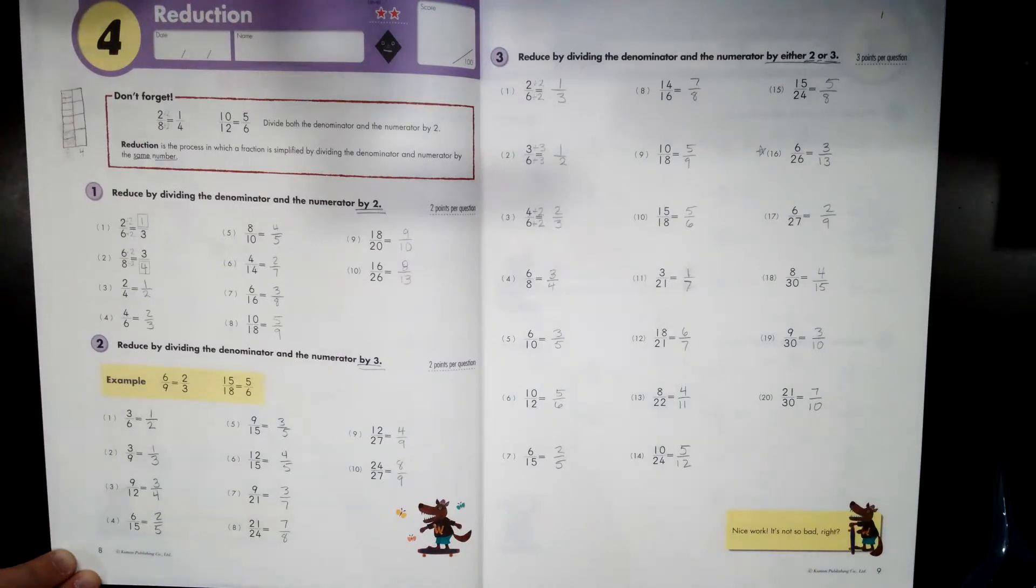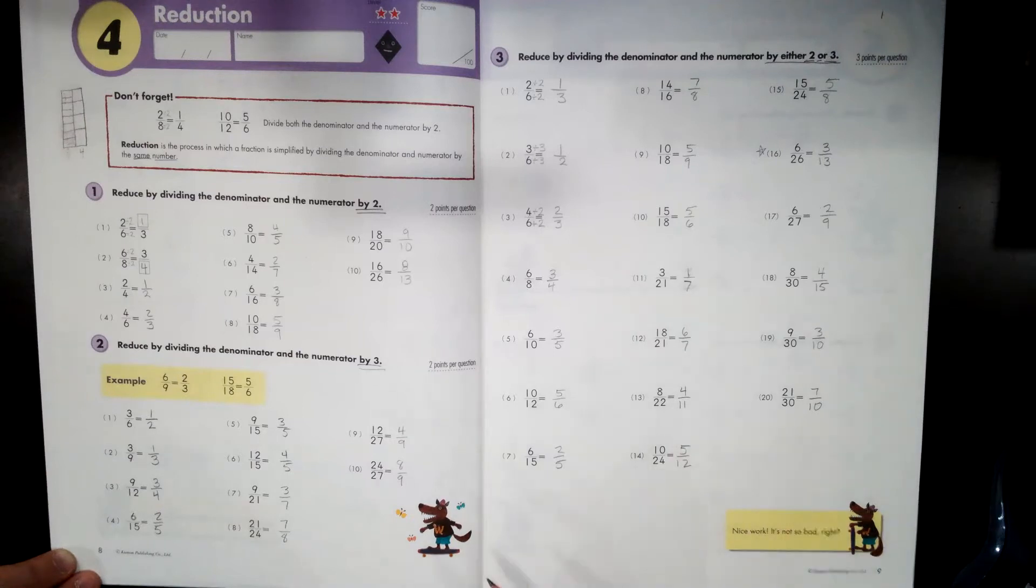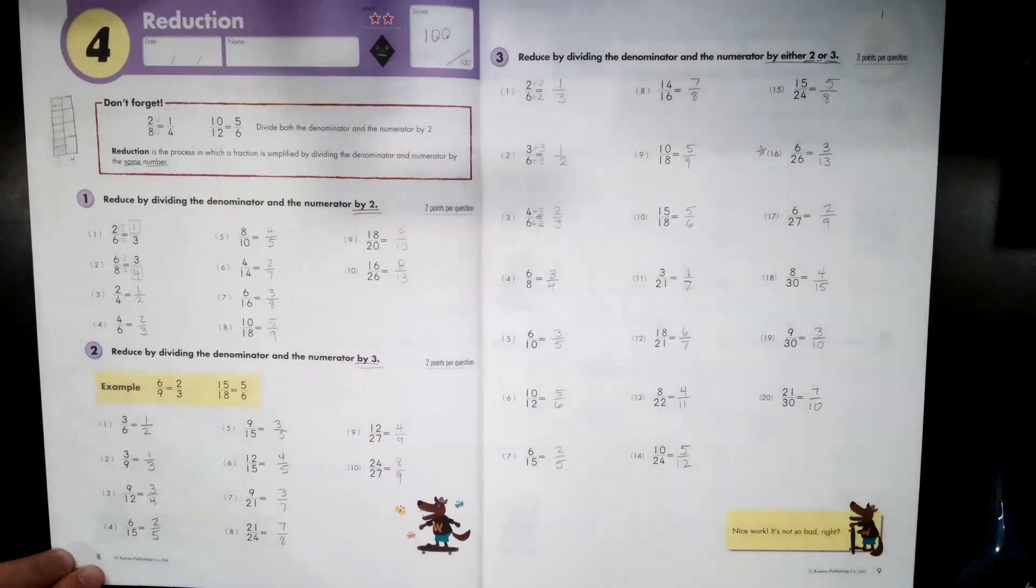So figuring out whether it should be divisible by two or three to get to the lowest possible number is something that takes a little practice. And that's what we're doing on this page is practicing. So good job finishing all of this work. Check it. Make sure that it's correct. If it's not correct, fix it. Make it correct before you go on. When you're all done, give yourself that beautiful one hundred percent and you are ready to move on to lesson five.